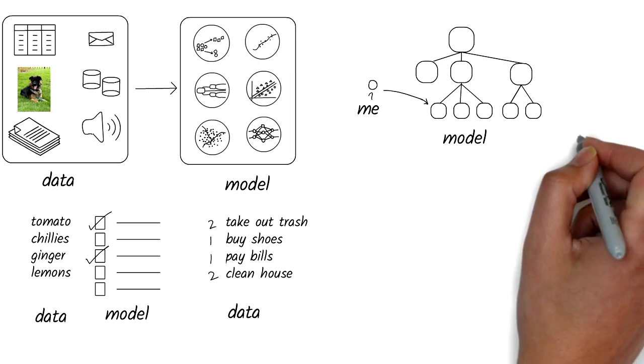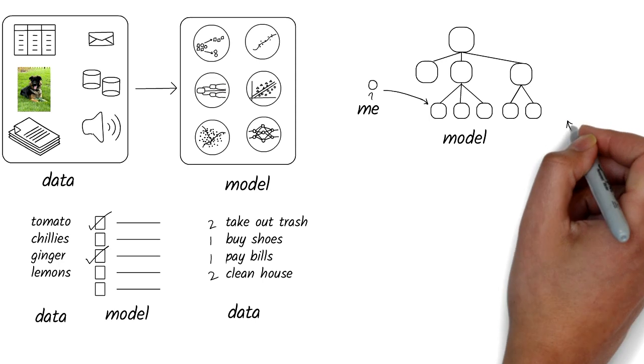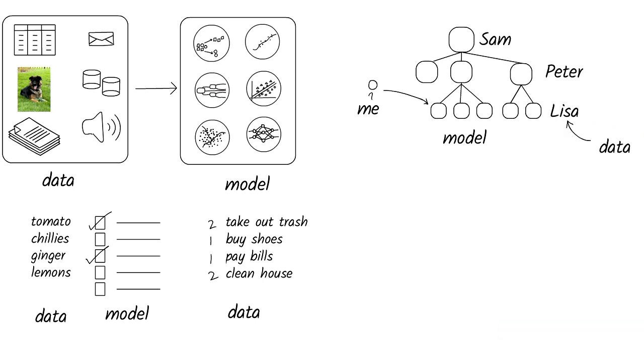Companies use tree structures to visualize their reporting structure. All companies use the same model but populated with their own people's names. In other words, the model has the same hierarchical structure, but the content is different across different companies.